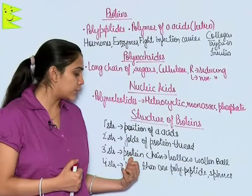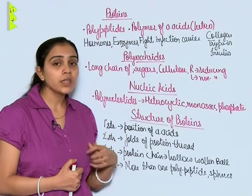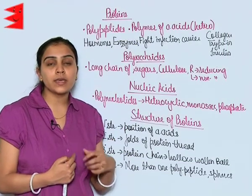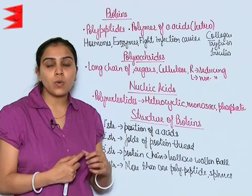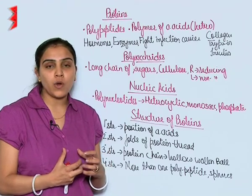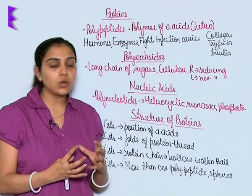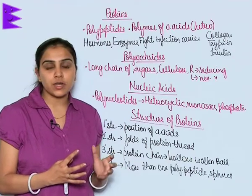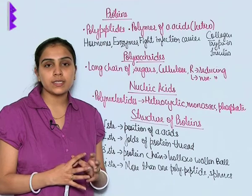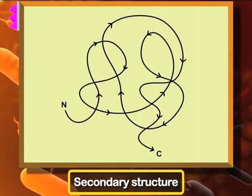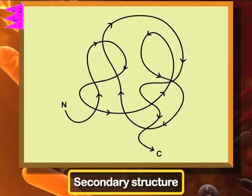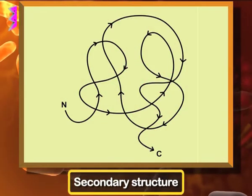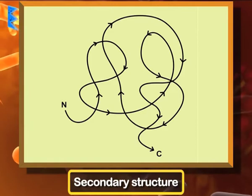Tertiary structure. The protein chain also gets coiled and forms a hollow woollen ball-like structure. As you can see this hollow woollen ball in the diagram, this gives rise to the tertiary structure.